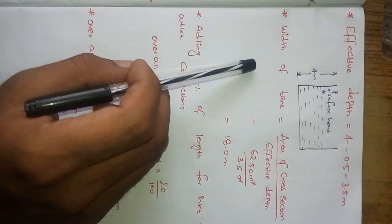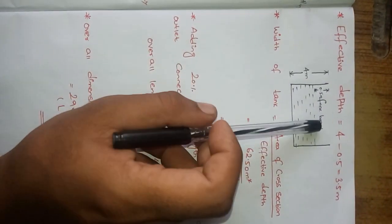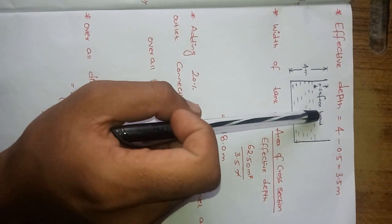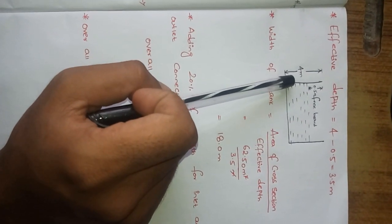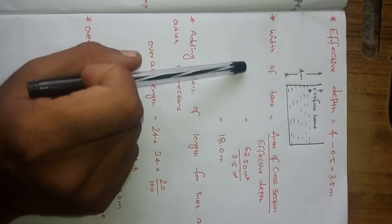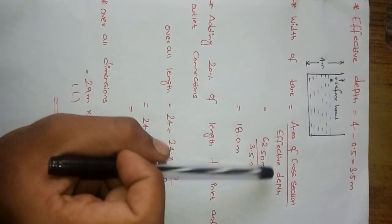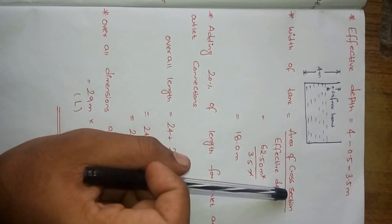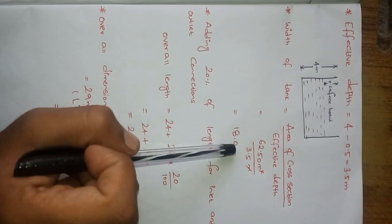Next we have to find out the effective depth. What is the effective depth? Total depth of tank is 4 meters. The freeboard is the space which is left at the top of the tank, which is 0.5 meters. We have to subtract: 4 meter minus 0.5 meter equals 3.5 meters. That is the effective depth. Next we calculate the width of the tank. Width of the tank formula is area of cross section by effective depth. Area of cross section we have got is 62.50, and effective depth is 3.5 meters. We get the value of 18 meters.